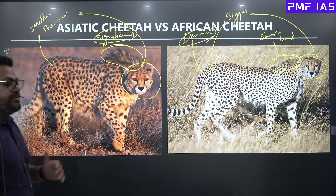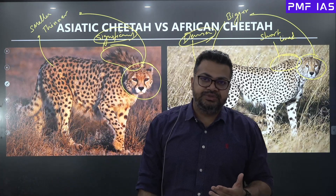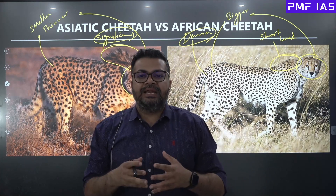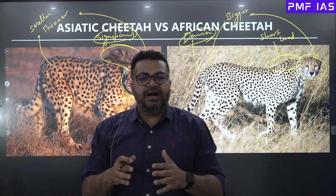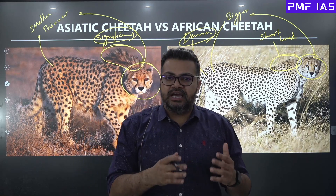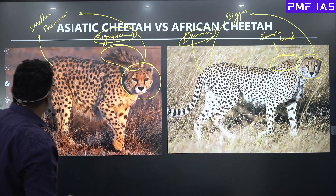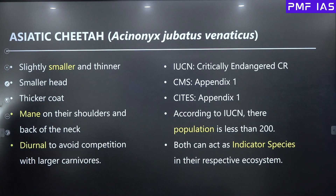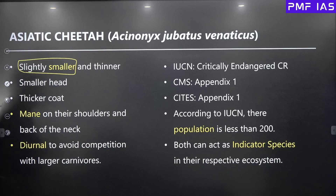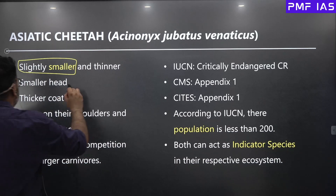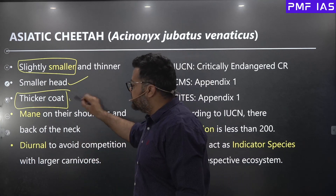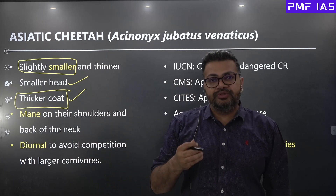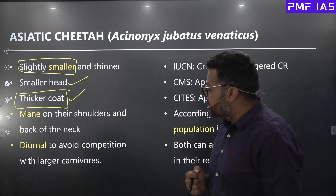People often ask questions regarding the speed of the two Cheetahs. Although there is no comparative study which can compare which Cheetah is faster than the other, both of them are considered to be the fastest animals of their respective ecosystems. The Asiatic Cheetah is slightly smaller than the African Cheetah, with a smaller head, but the overall fur is much thicker and denser than the African Cheetahs.